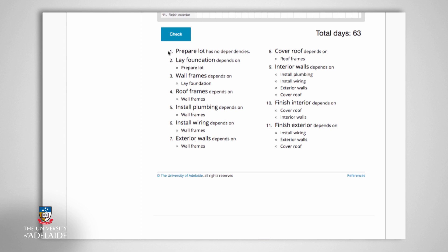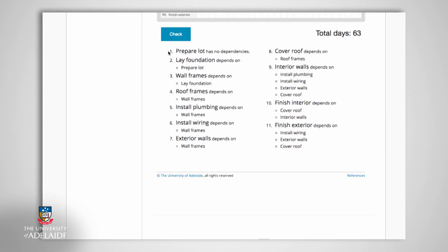Dependencies are the relationships between the preceding tasks and the succeeding tasks. If we take another look at the first three activities of building the house — preparing the lot, laying the foundation, and erecting the wall frames — we need to consider the interrelationships that may exist. Simply put, we cannot start Activity 3, erecting the walls, before we have completed Activity 2, laying the foundation, which in turn cannot be achieved before Activity 1, preparing the lot. Laying the foundation therefore has one dependency, while erecting the wall frames has two dependencies.